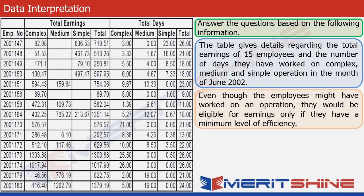A table is given here that shows data for 15 employees for the month of June 2002. It captures their earnings and the number of days they have worked in the month. The work has been classified into three kinds of operations: complex, medium, and simple. An employee can earn for complex work, for medium work, and for simple work, and the three together make his total earnings.